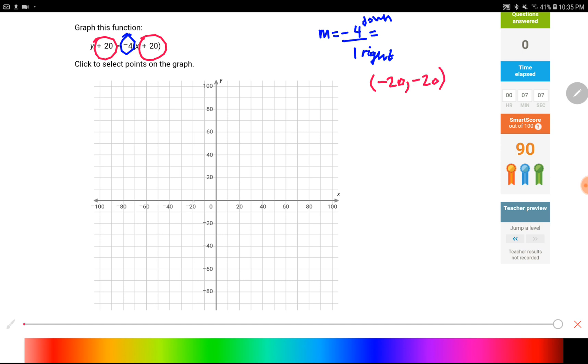Start from that point. Over left 20, down 20 is my starting point. And then I will go down 4, right 1, every single time. 1, 2, 3, 4, and then right 1. So the line would look like something like this.